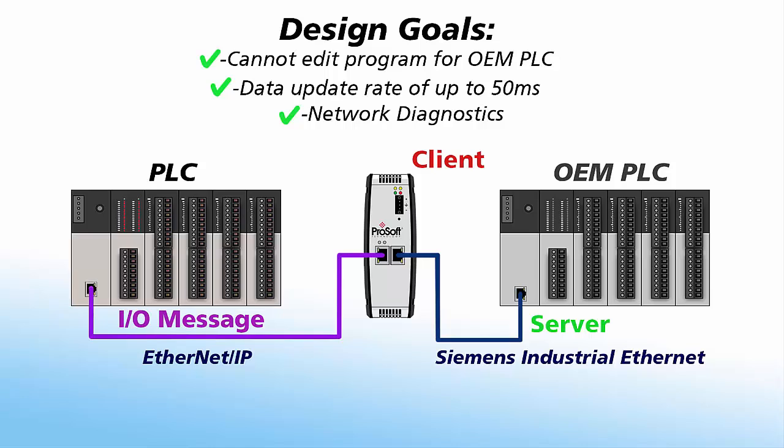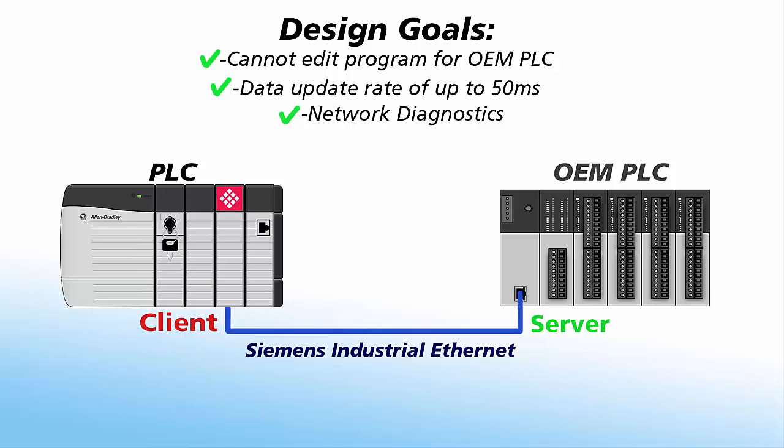The PLC will also have access to communication diagnostic tags, which allow you to use your PLC programming software to troubleshoot problems. Instead of using our gateway, our in-chassis communication module could also be used to solve this application. Our in-chassis modules use I/O messaging across the backplane to the PLC. The module's communication port would be set up as a client to talk to the OEM PLC, and this would meet all the design goals for the application and give you a more integrated solution.